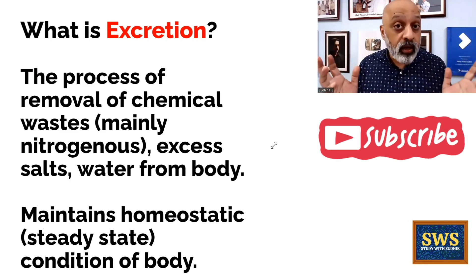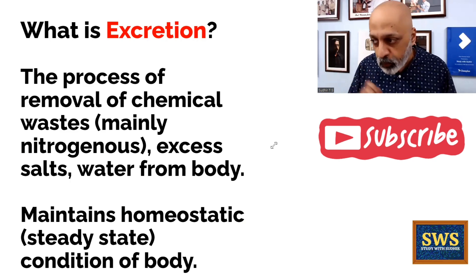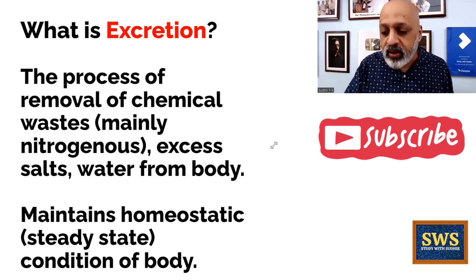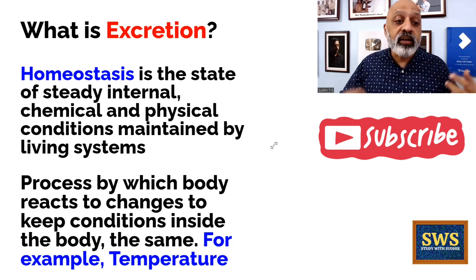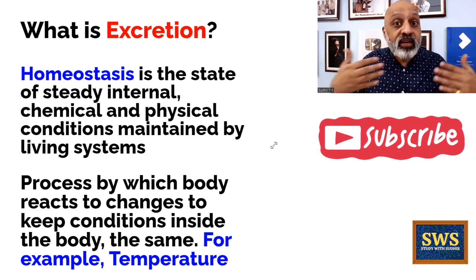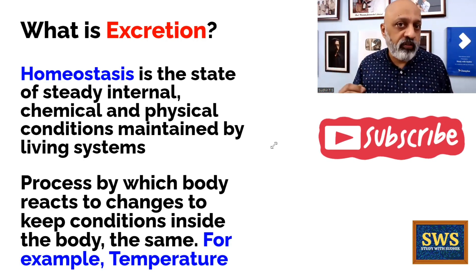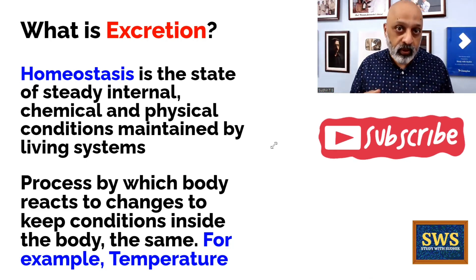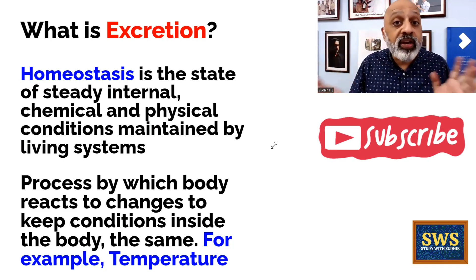Excretion — what would happen if it didn't occur? It is necessary because it maintains the homeostatic condition of the body. Now what exactly is homeostasis? It is the steady state — the state of steady internal chemical and physical conditions maintained by all living systems. Any living system has an internal chemical and physical condition; that is called homeostasis. It is the process by which any living body reacts to changes to keep the internal conditions the same. In simple language, it is the ability to maintain some kind of internal stability.